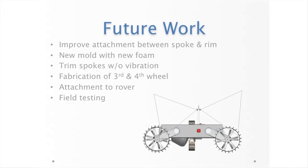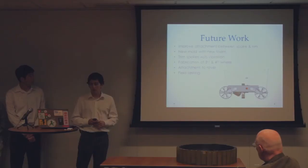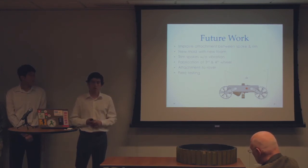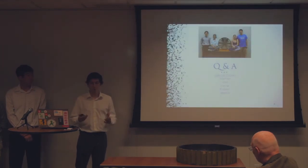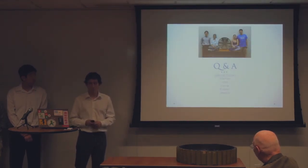Also, we need to trim the spokes - find a better way to trim the spokes, because right now we're getting some vibration with the robot arm CNC, which is causing, as you might have seen, some slight imperfections in the spokes, but it's nothing too major. Also, fabrication of a third and fourth wheel components after the new foam comes in. Then, obviously, we want to actually attach this to the rover so we can get some field testing done and see how these perform under real-world situations. So, thank you very much. We'll take questions now.